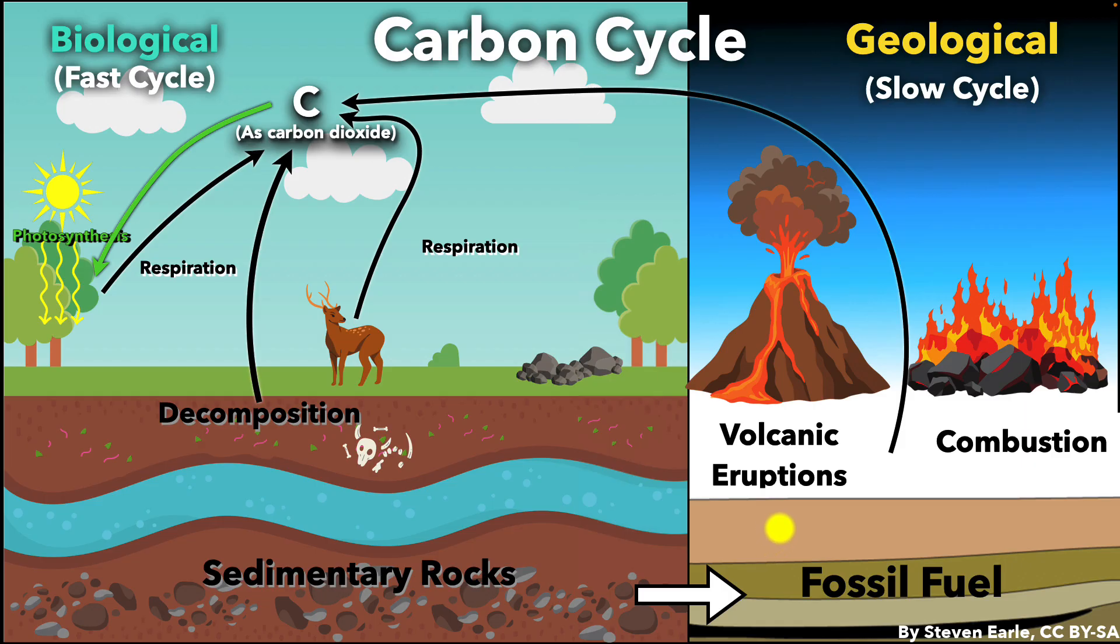And that's why we need to make an effort to move some of that carbon back into long-term reservoirs like forests, wetlands, mangroves, and healthy soils. Planting trees, protecting natural ecosystems, and improving land use are all ways we can help keep more carbon stored and reduce the impact of climate change.